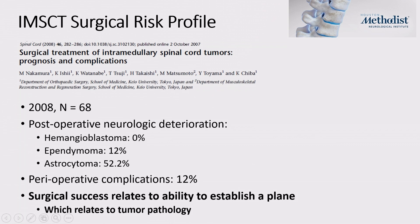Surgery outcomes are somewhat variable. In a 2008 paper, even just 15 years ago, half of patients with astrocytoma who underwent resection had some sort of neurological deterioration afterward, and perioperative complications occurred in 12%. Success of these surgeries relates to the ability to establish a plane between the tumor and the surrounding spinal cord, which itself depends on tumor pathology. Ependymoma and hemangioblastoma tend to have identifiable planes, whereas astrocytoma does not — making complete resection difficult or sometimes impossible.